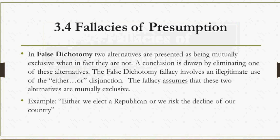Here's an example: 'Either we elect a Republican or we risk the decline of our country.' The person makes this look mutually exclusive, as if these are the only two options, when in fact they are not. It is possible to elect a Democrat and the country doesn't go into decline, and it is also possible to elect a Republican and the country does go into decline. Other alternatives are being completely ignored, yet the person makes it seem as if these are the only two options.